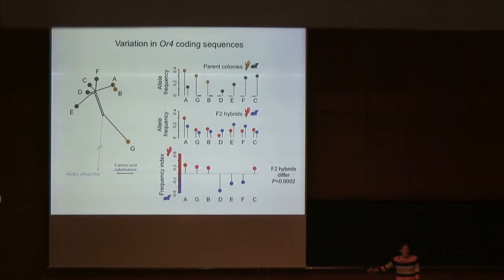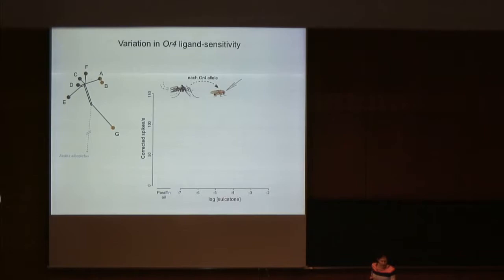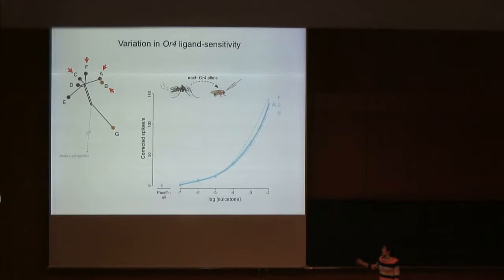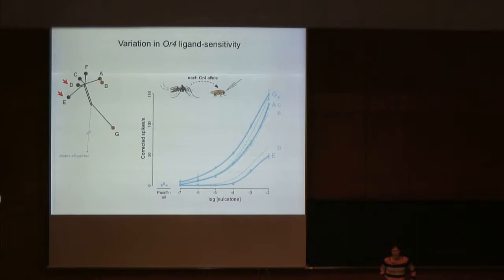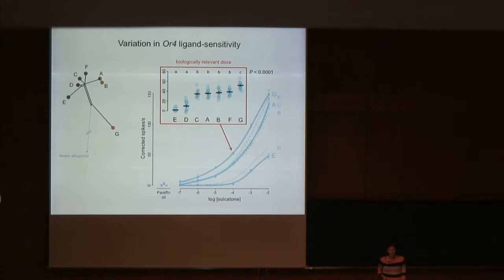One obvious hypothesis is that these alleles differ in their sensitivity to sulcatone. We tested that by taking all seven alleles, putting them individually into flies, and recording from OR4-expressing neurons while exposing the fly to different doses of sulcatone to get dose-response curves for each allele. Four alleles had similar sensitivities. Allele G, specific to the domestic colony, was slightly but significantly more sensitive. Alleles D and E were much less sensitive — really not sensitive at all at physiologically relevant concentrations. So yes, each allele has its own characteristic sensitivity to sulcatone.